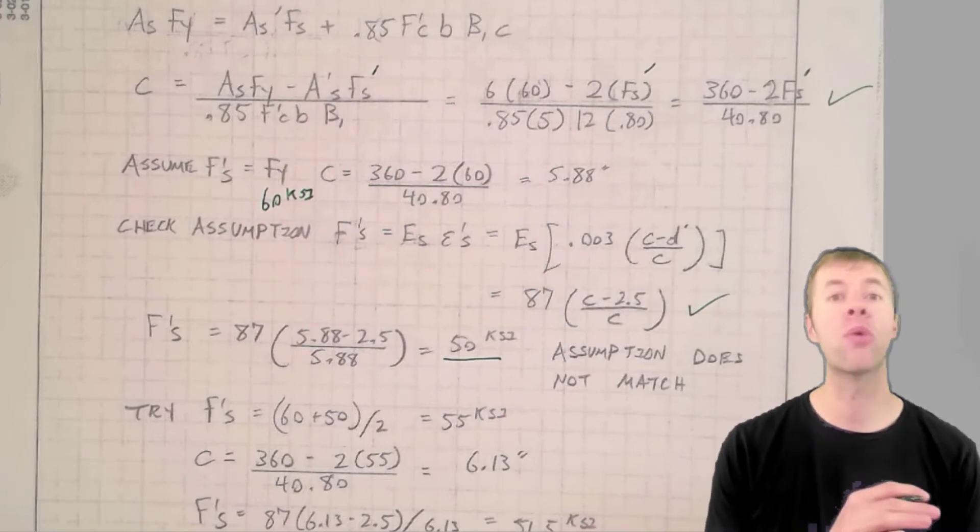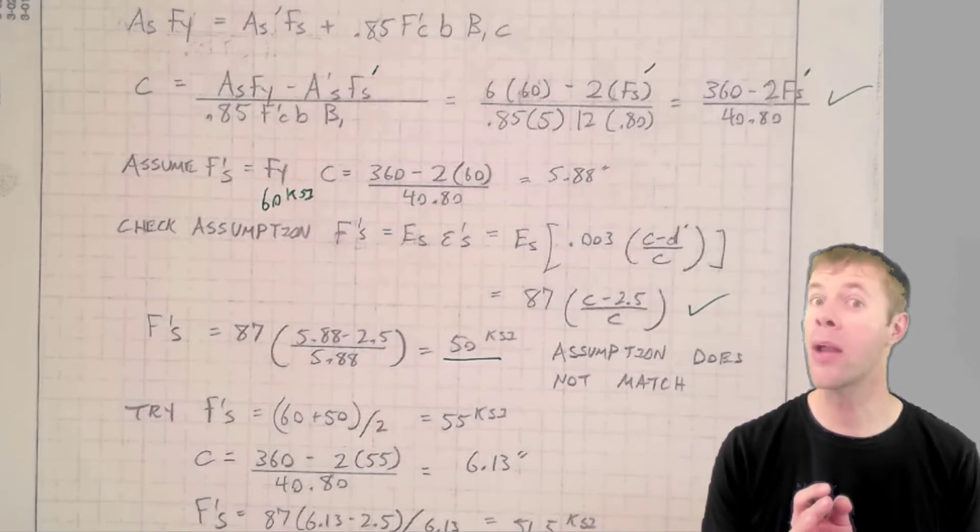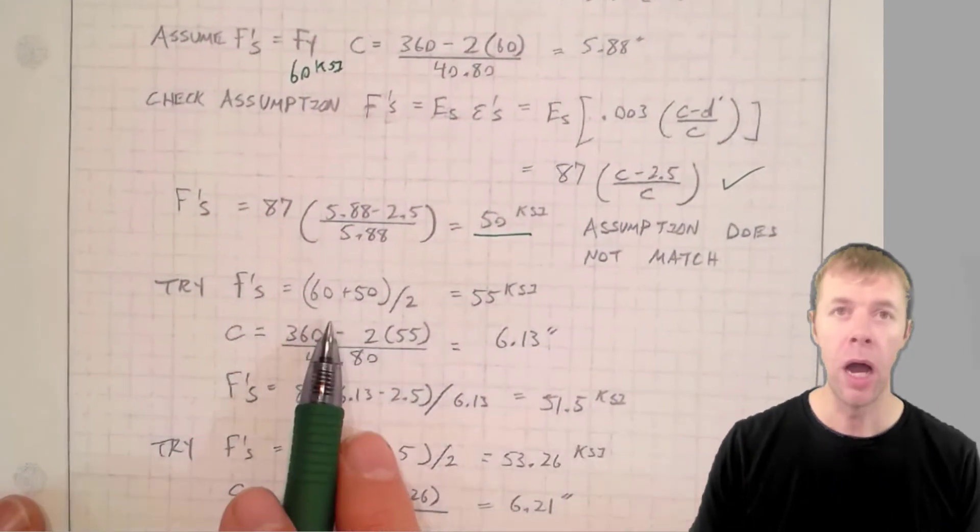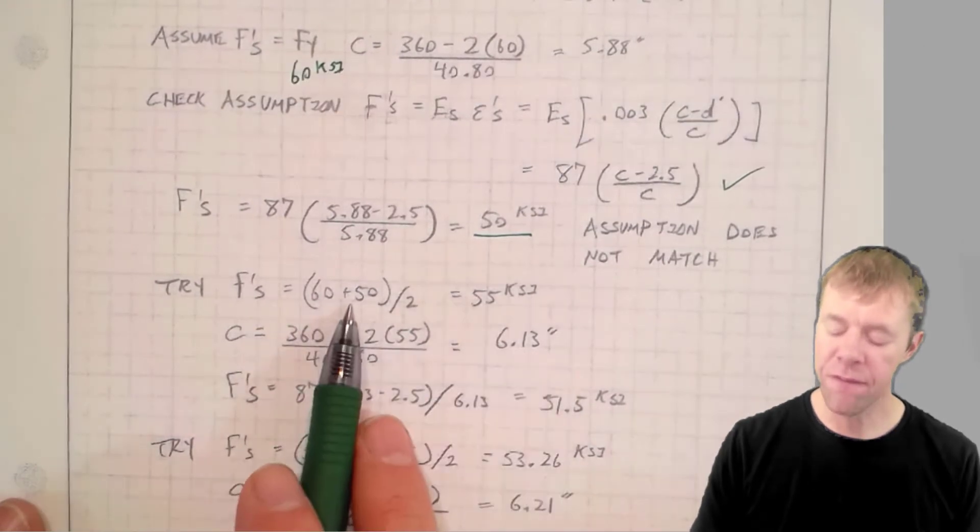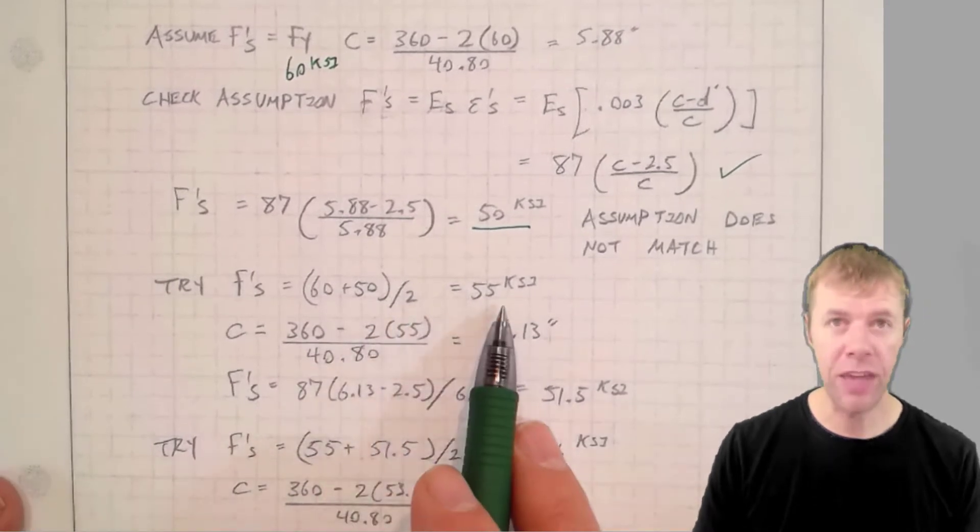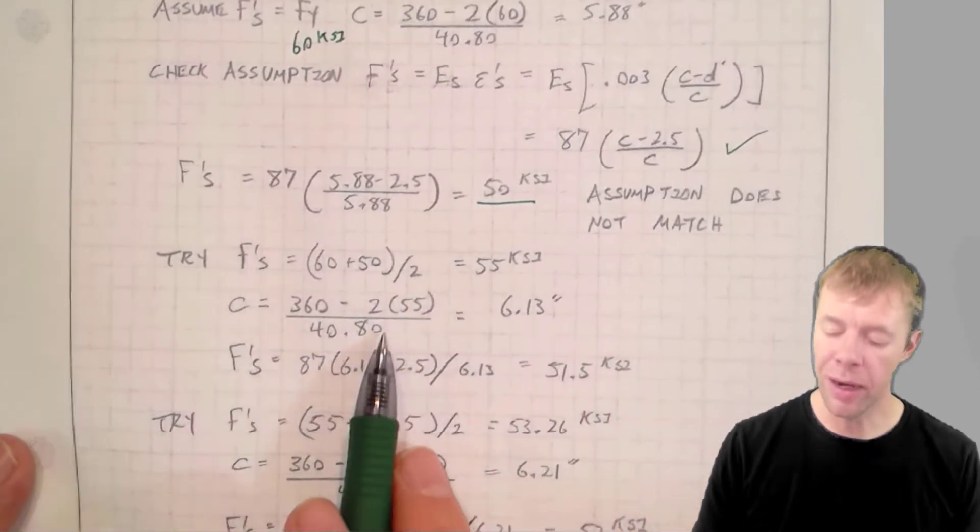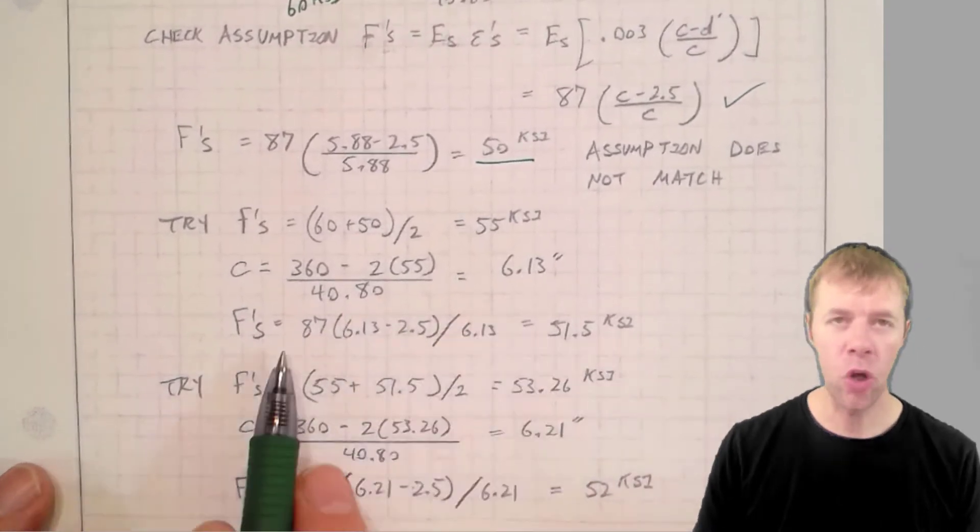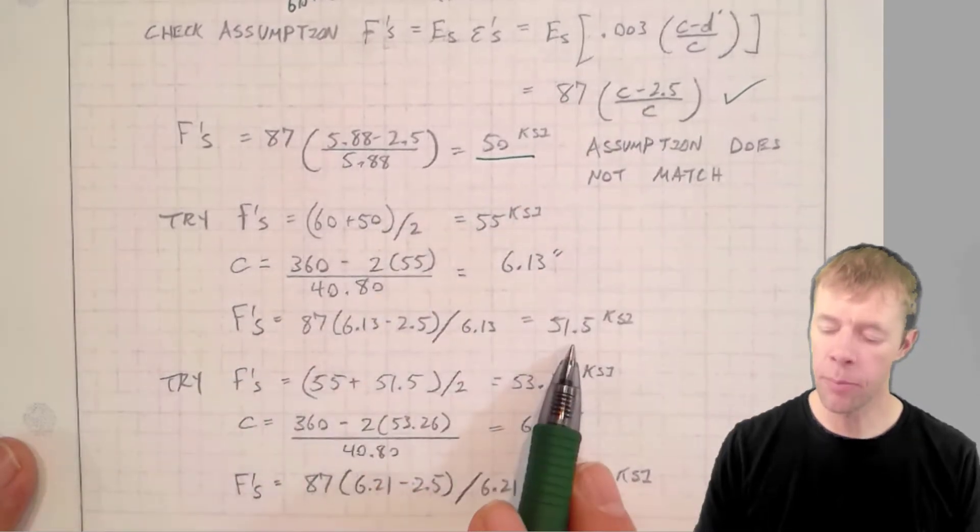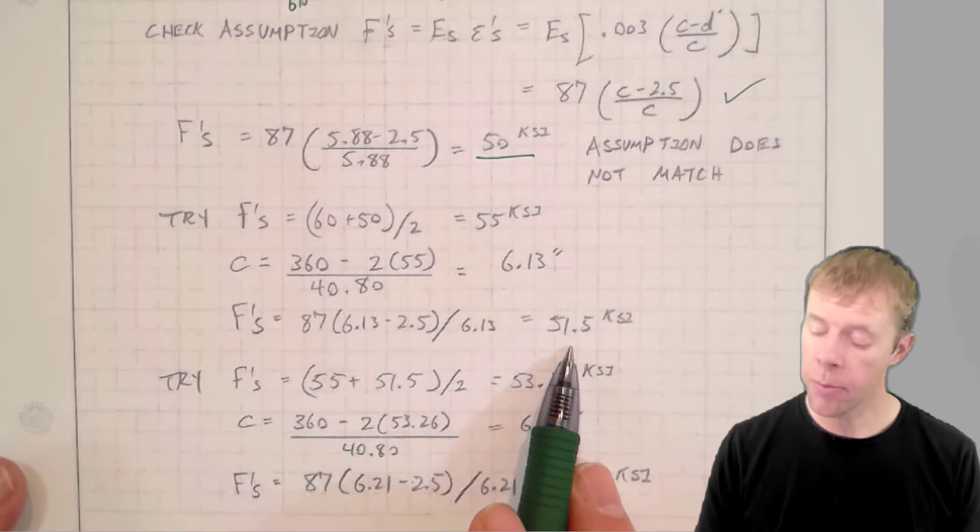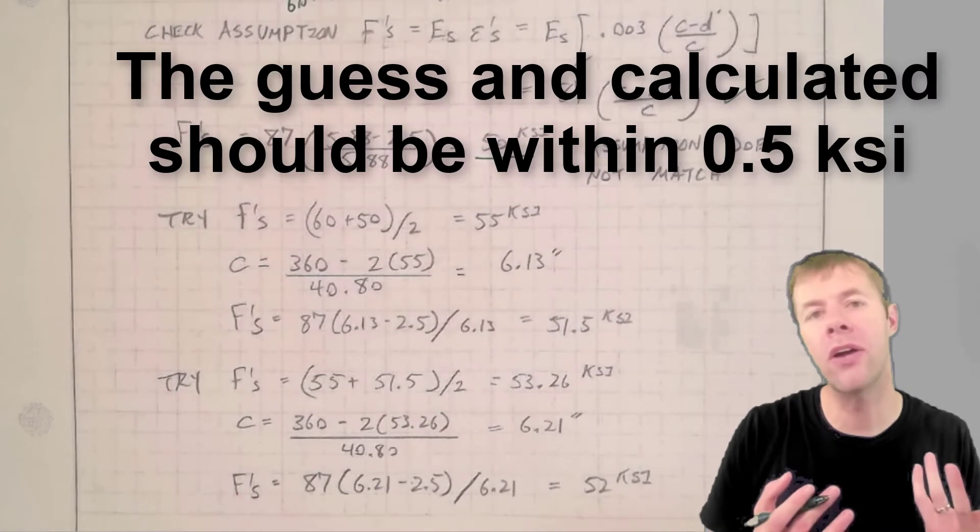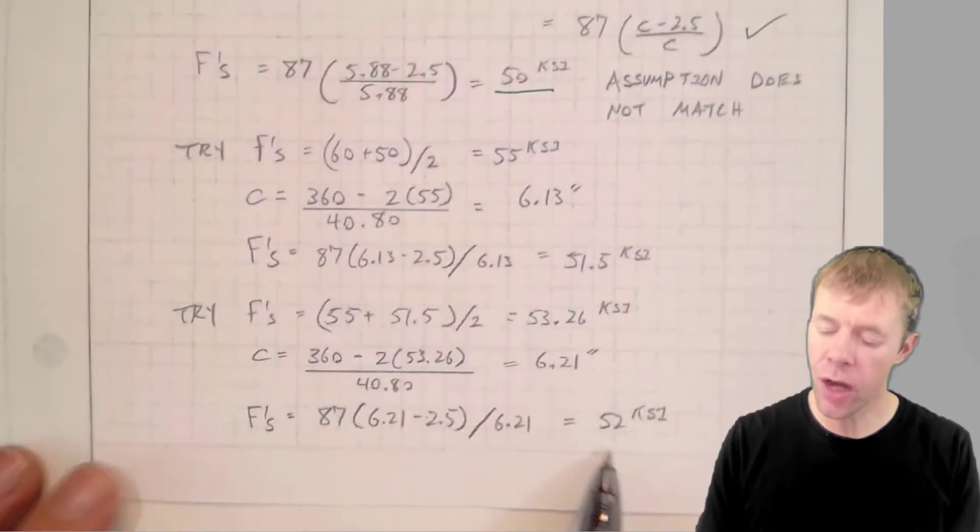60 and 50 aren't that far off. Now, if I would have got a negative number, if I would have been way far off, then I might want to pick a different number. But 60 and 50, not that far off. So what I'm going to do is I'm going to average them. I assumed 60, I got 50, I'm going to divide by two. This is kind of like smart guessing. And I get 55 KSI. And I work the problem again. I plug in for my C. I get 6.13. I solve again for my F prime S. That's the equation I showed you before. And I get 51.5 KSI. I'm closer. Not quite the same. How close does it have to be? I don't know, half a KSI or so. So we're going to keep guessing. Still not quite there.